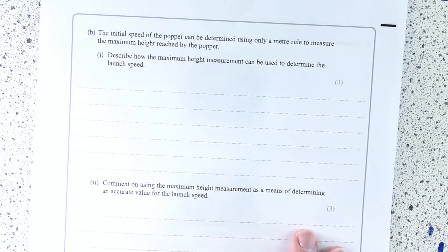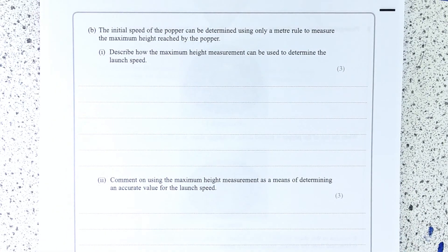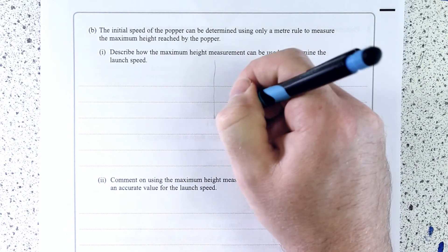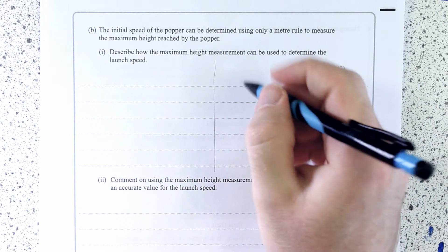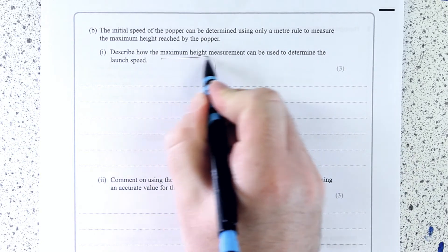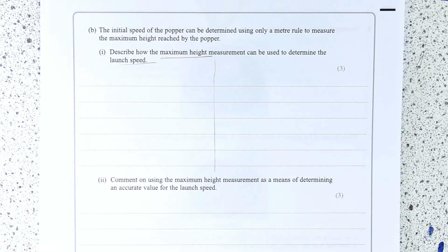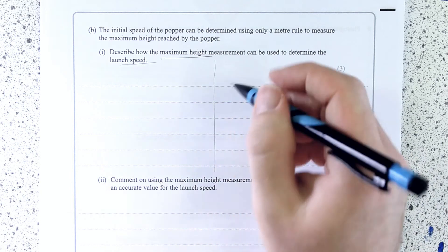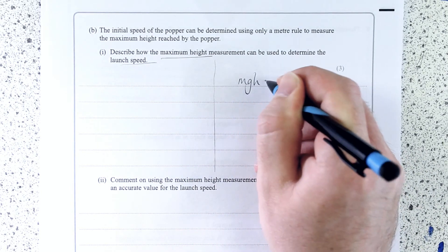Next one, describe how maximum height can be used to determine the launch speed. Now, actually there's two ways to do this. I hope you kind of remembered this. Maximum height determining the speed. Originally I said it's a conservation of energy question or it certainly looks like that.